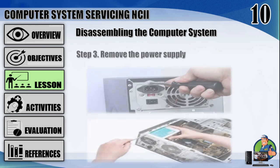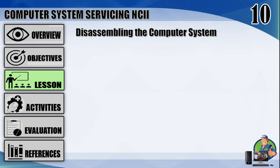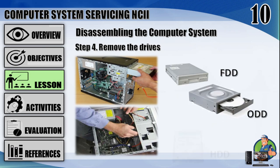Step 3: remove the power supply — push the power supply from the outside, and then lift it up. Step 4: remove the drives — the floppy disk drive, optical disk drive, and hard disk drive. Unplug the cables from the back of the drive.